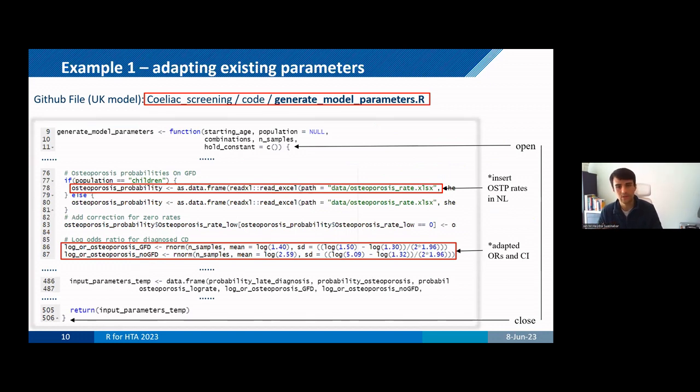where we read into an Excel file that contains the general population rates of osteoporosis, that's simply where we change the input file to read the Dutch population rates. And the only thing that we needed to be careful with here was that the structure of our new input file was compatible with the rest of the code. And then moving on, we also updated the log odds ratios for the increased risk of developing osteoporosis, as you can see in lines 86 and 87. So this type of change is really very straightforward because osteoporosis was not a new parameter in the model. So we just needed to change those input values.